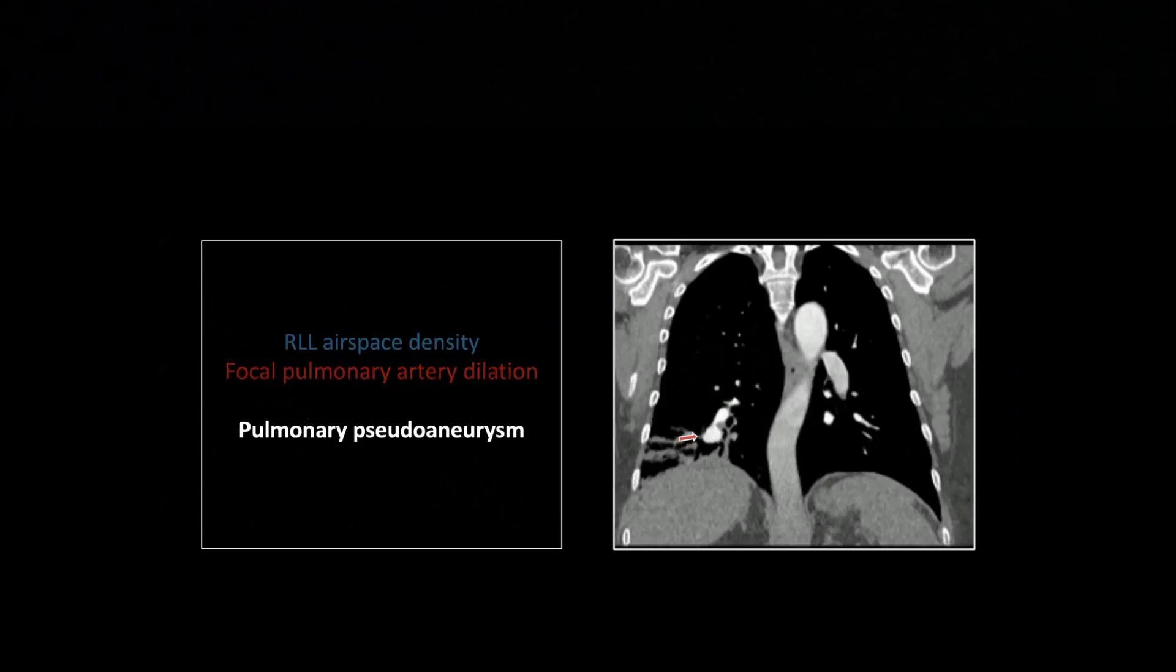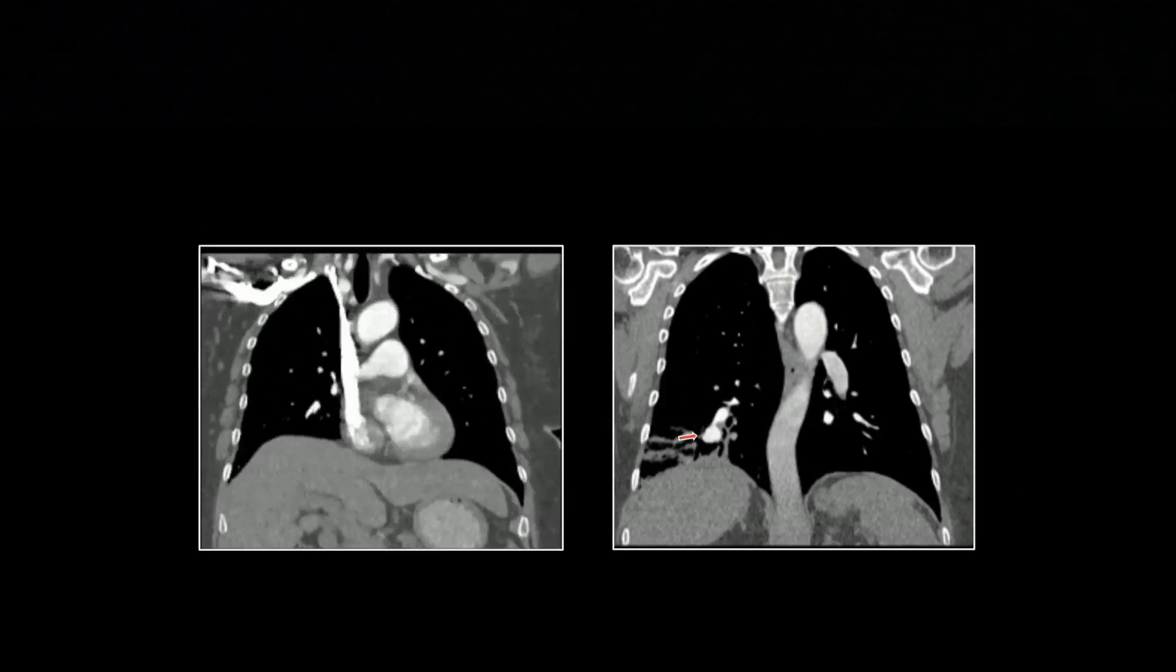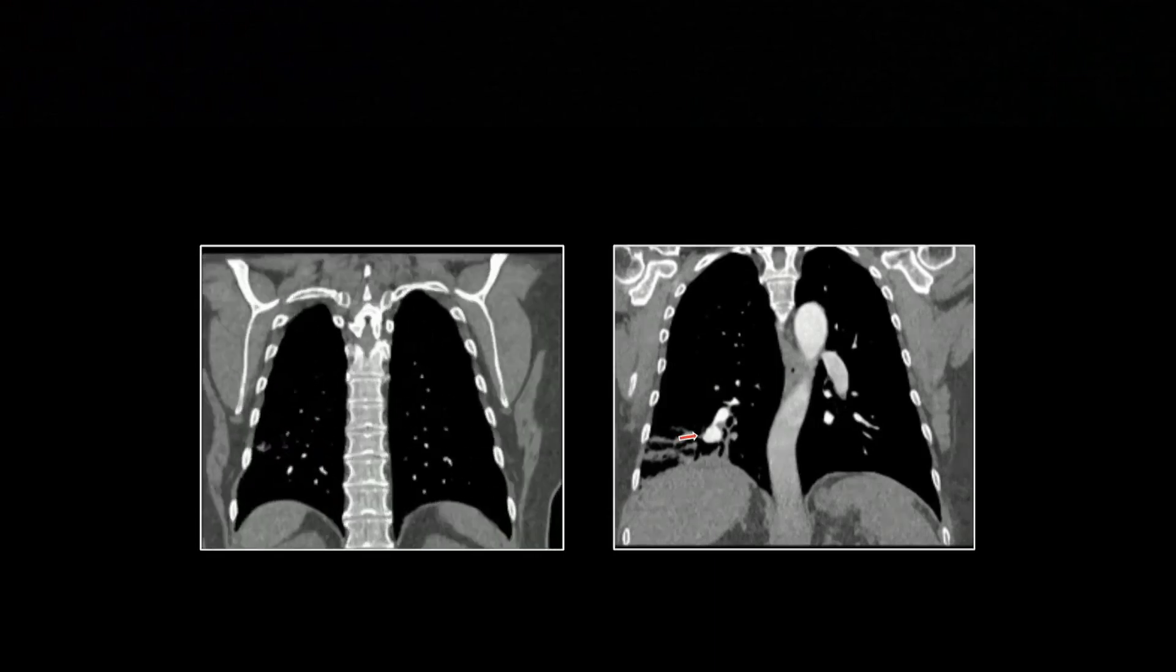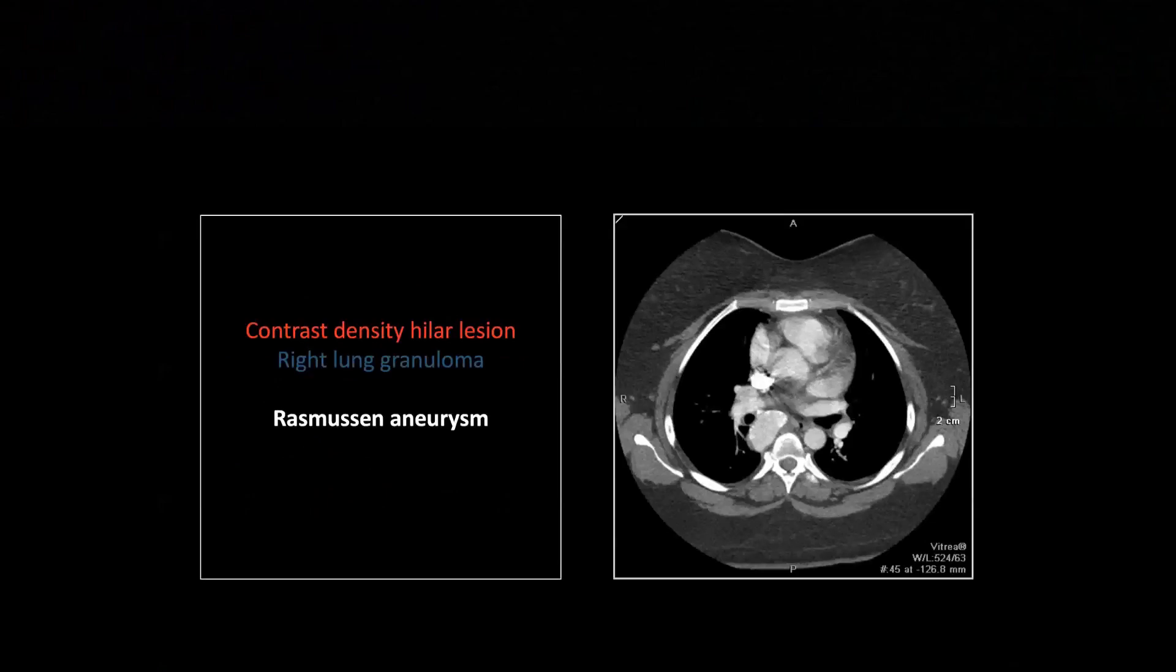This is much better seen on the coronal. You can see there's a little neck extending to the pulmonary arterial branch that's supplying this pseudoaneurysm right there. That is a destructive pneumonia with pseudoaneurysm formation.